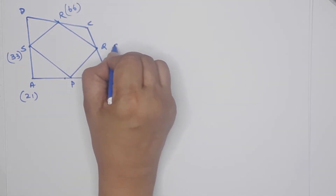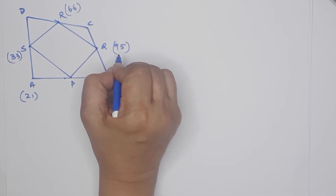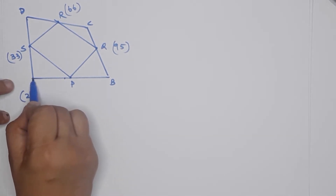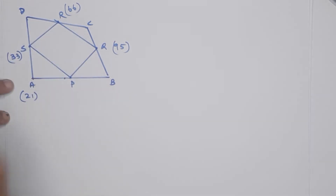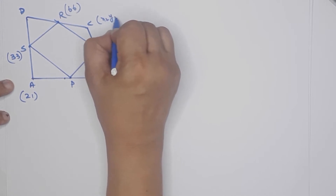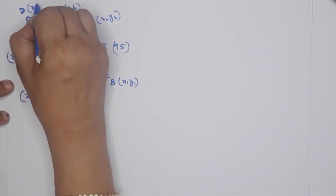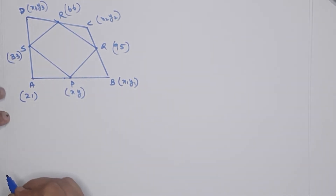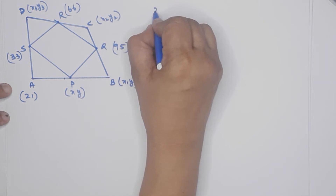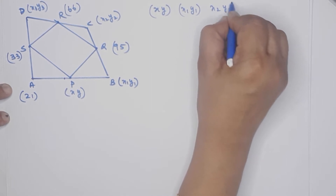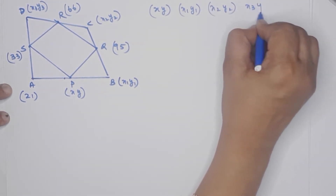We have to work with these points. This point is A, B, C, D. We can label them: I use x1, y1 for the first point; x2, y2 for the second; and x3, y3 for the third. Then we can find point P with coordinates (x, y).